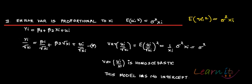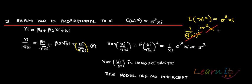You divide the entire model by the square root of xi. The new error term is ui over root xi, so the variance is E of (ui over root xi) squared, which equals 1 over xi times E of ui squared. Since E of ui squared equals sigma squared xi by assumption, the xi terms cancel out, leaving just sigma squared — which is homoscedastic.